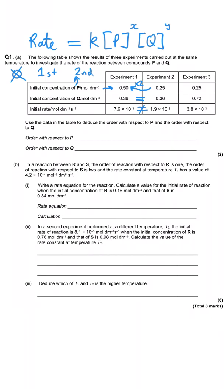If it is first order, whatever we do to P's concentration, the rate will experience that same proportionate change. We've doubled P, but when we do 7.6×10⁻³ divided by 1.9×10⁻³, we see the rate has quadrupled. That means we doubled the concentration and the rate was doubled raised to the power of the order, which is 2 — giving a factor of 4. So the order of reaction with respect to P is second order.